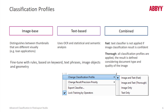Image classification relies on convolutional neural networks pre-trained by ABBYY on hundreds of thousands of documents. Transfer learning technology allows users to train the image classifier on their own documents with only a few samples.